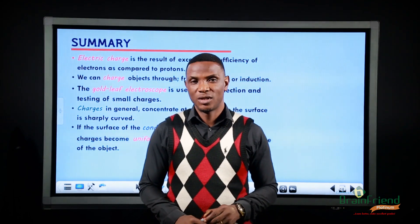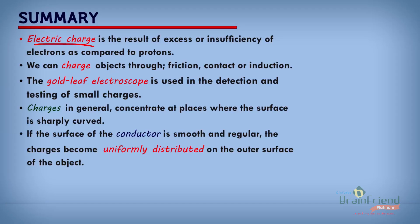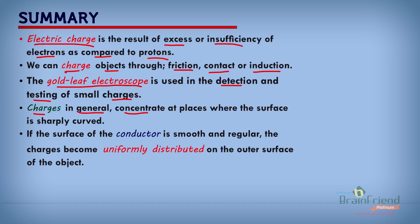We've come to the end of our class today. Let's take a recap. First, we learned that an electrical charge is the result of excess or insufficiency of electrons as compared to protons. We also learned that we can charge objects through either of three ways: friction, contact, or by induction. We learned that the gold leaf electroscope is used in the detection and testing of small charges. Considering the distribution of charges, charges concentrate at places where the surface is sharply curved, and if the conductor surface is smooth and round, charges become uniformly distributed on the outer surface.